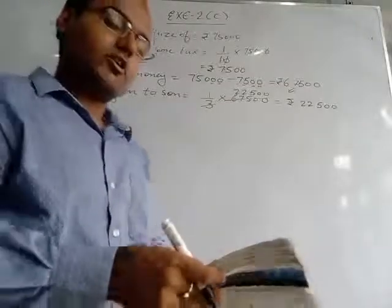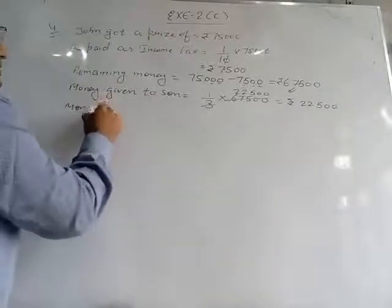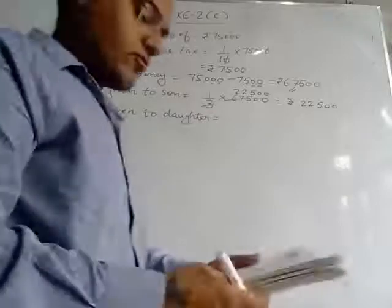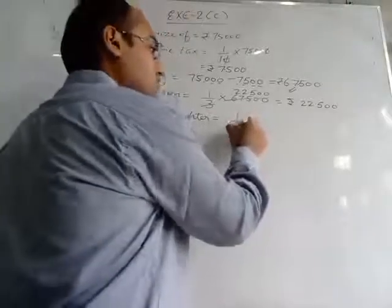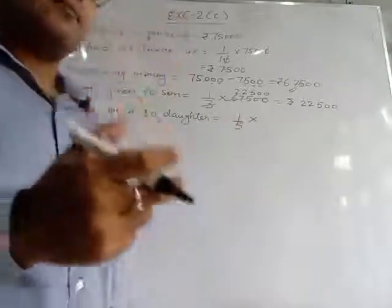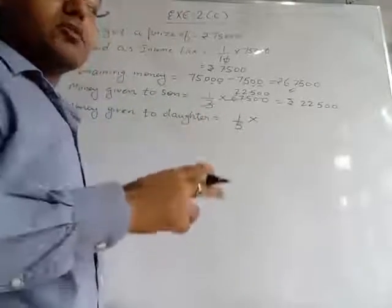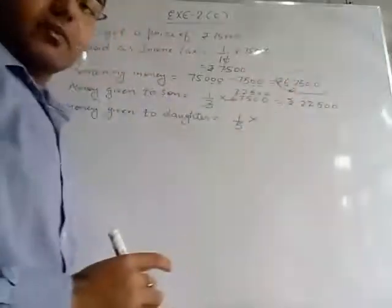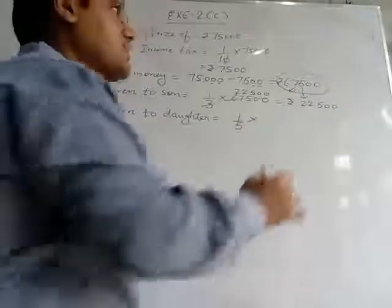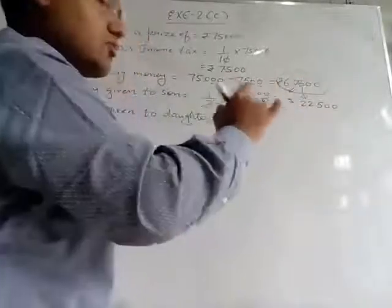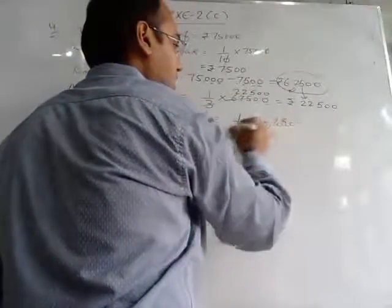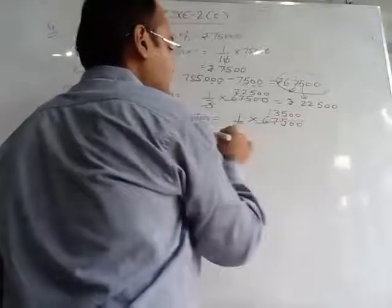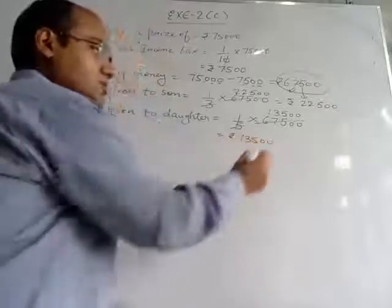He also gave 1/5 to his daughter. Since 1/5 is a fraction, we multiply 1/5 by the remaining amount of 67,500. Cancelling the 5s: we get 13,500 rupees he gave to his daughter — from the same remaining amount of 67,500.